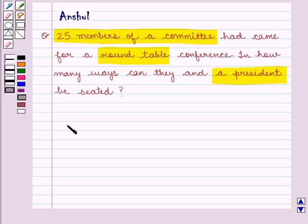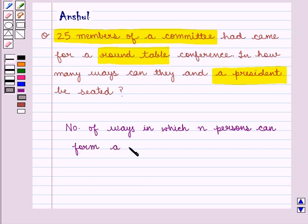We know that the number of ways in which n persons can form a ring is given by (n-1) factorial.